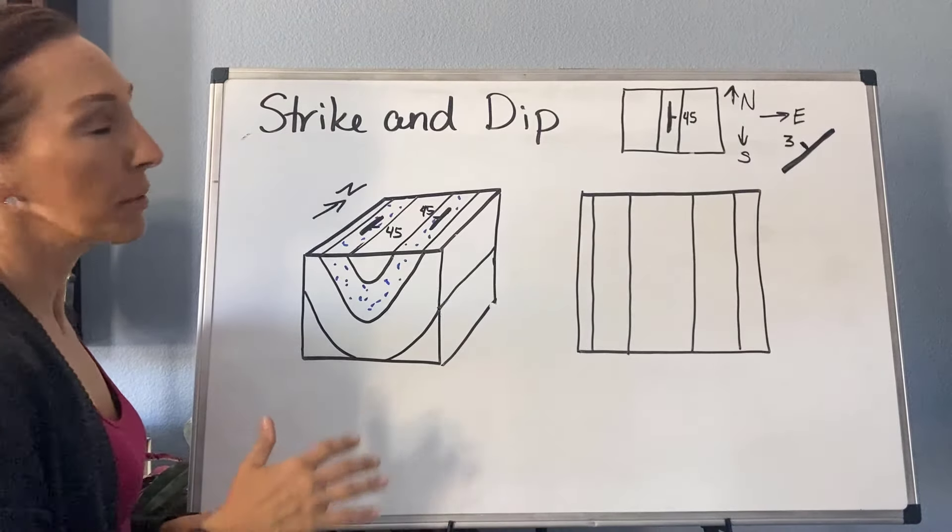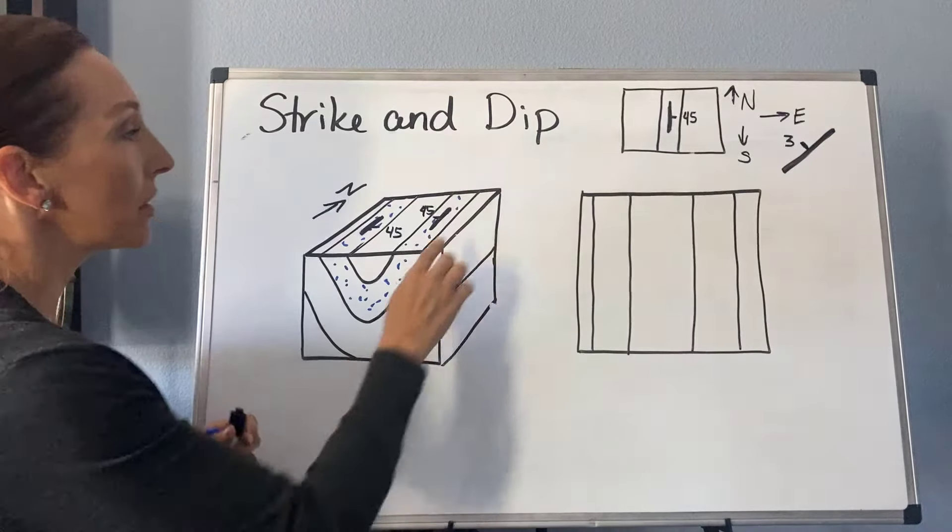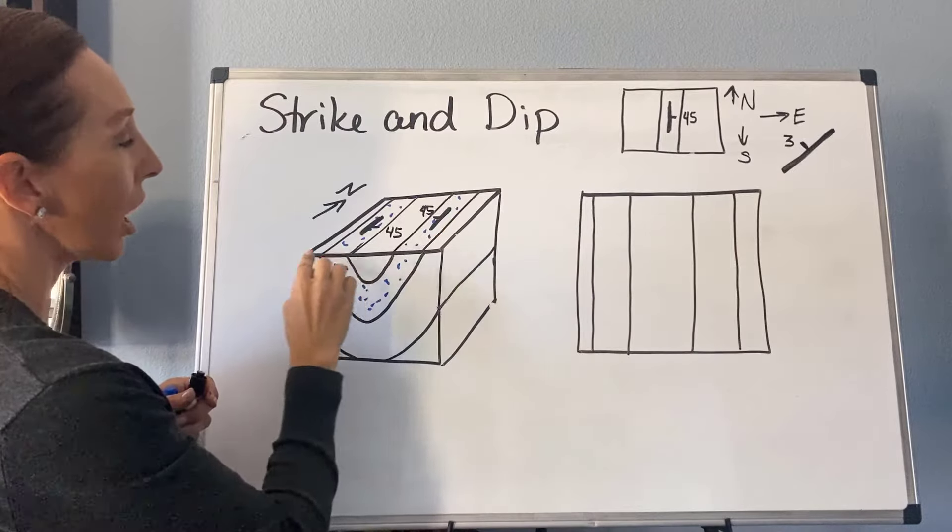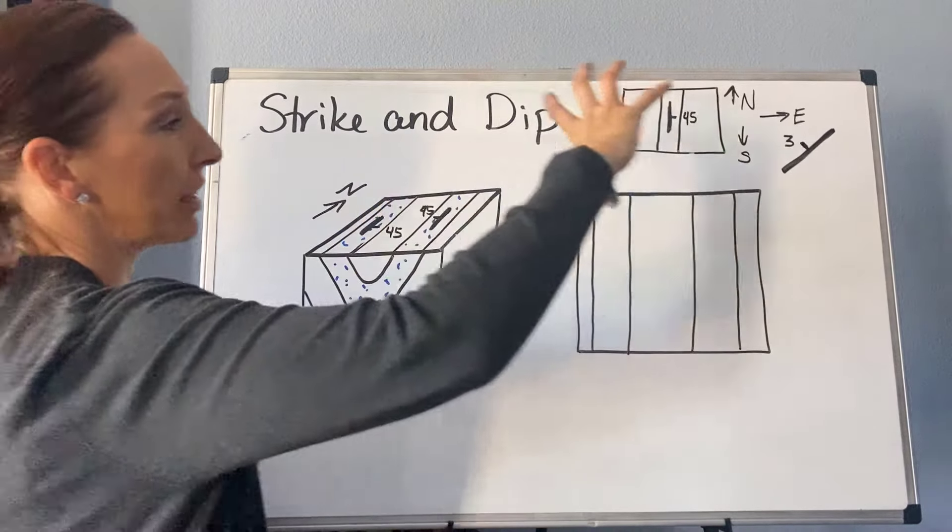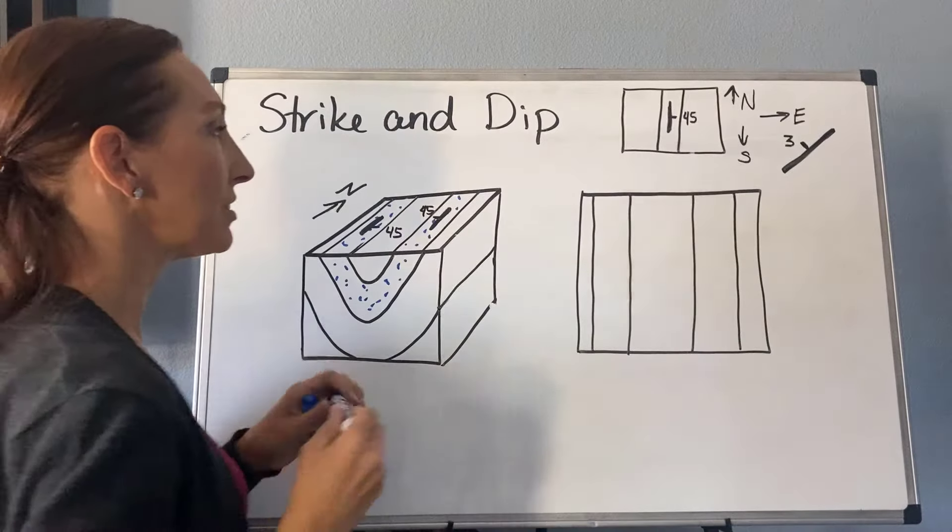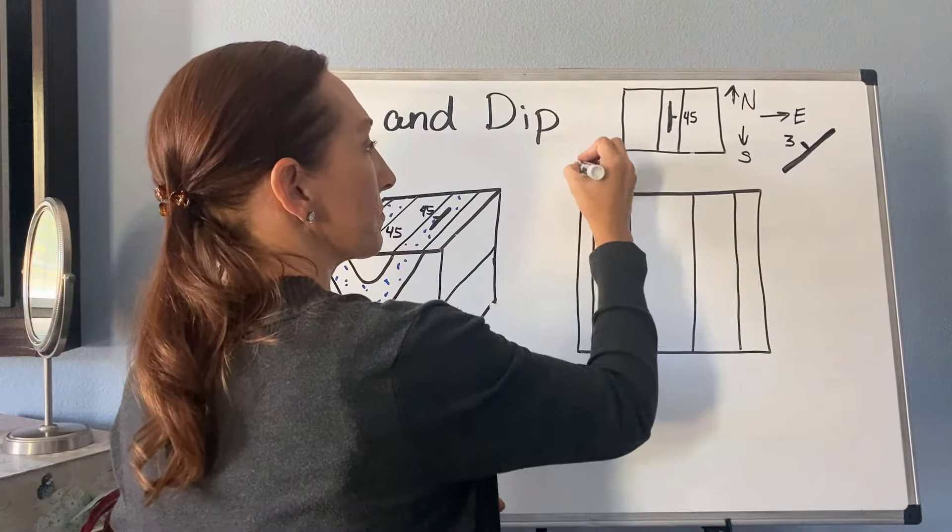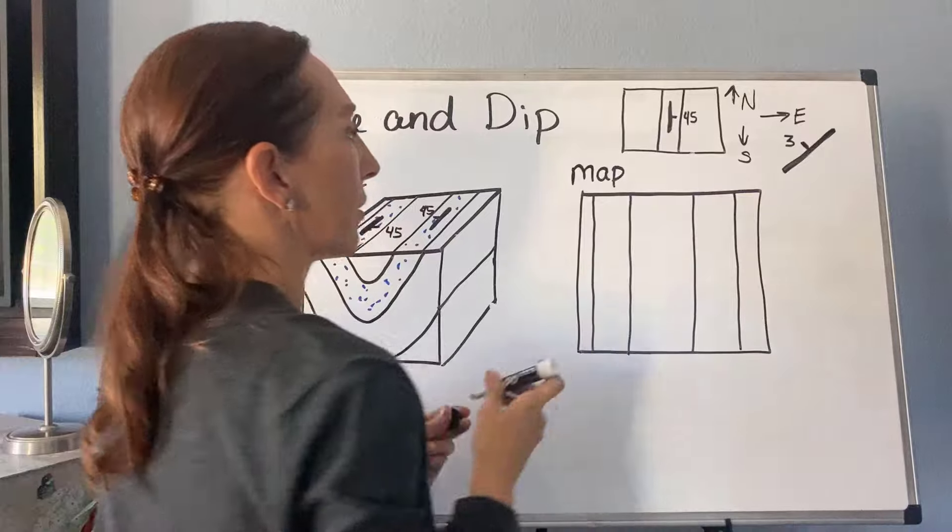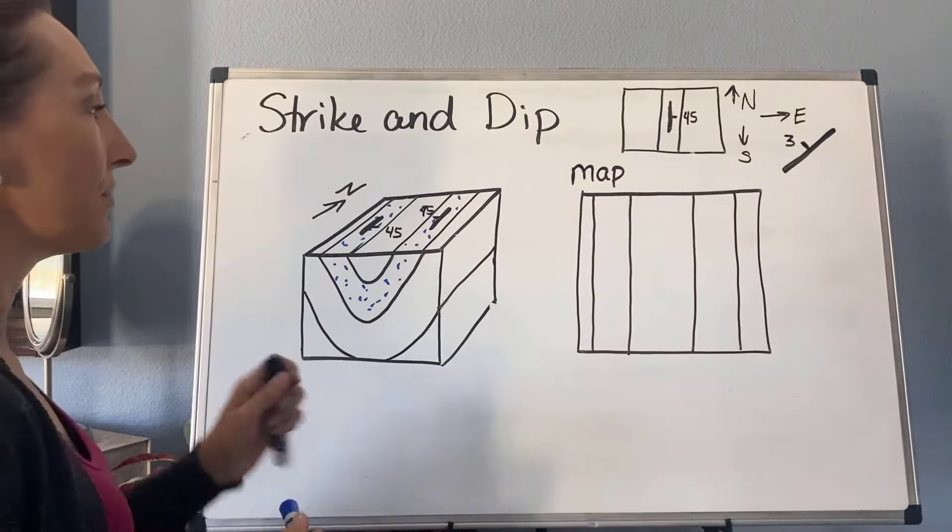Now, oftentimes you'll have a map that you're working with. So here, if I take the top of this block diagram off and I pop it over here, that's what my map view is going to look like. So let's label this map, so we're super clear about that.